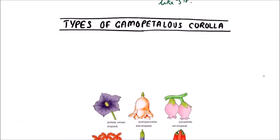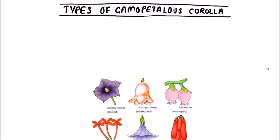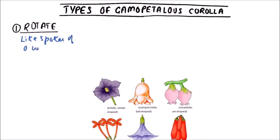Now the various types of gamopetalous corolla. The first one is the Rotate type. In the Rotate type gamopetalous corolla, it appears to be like the spokes of a wheel. We can observe this. This is the rotate or wheel-shaped gamopetalous corolla. The example includes Solanum nigrum.